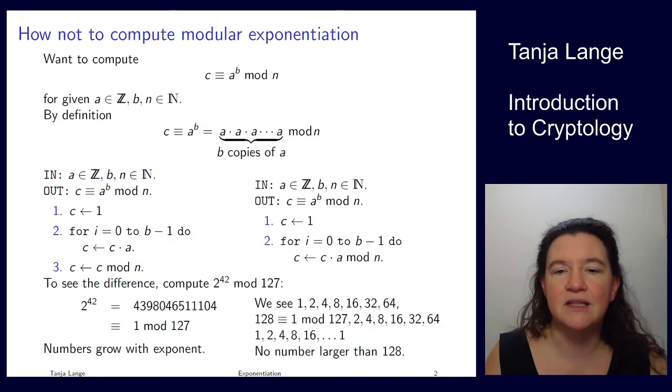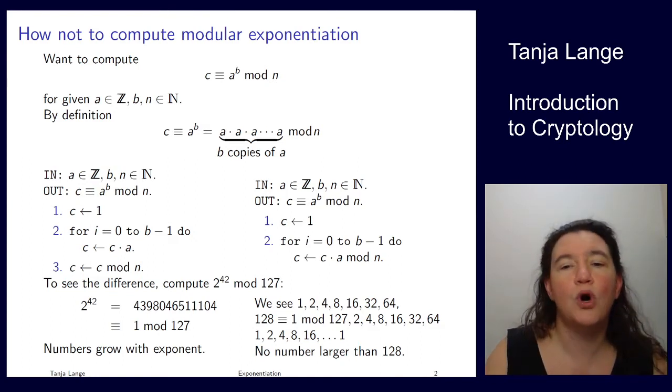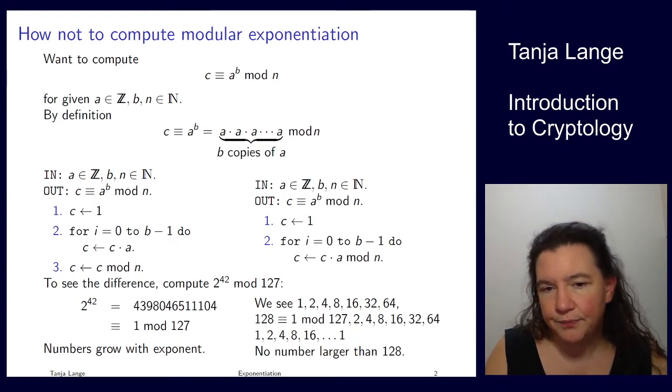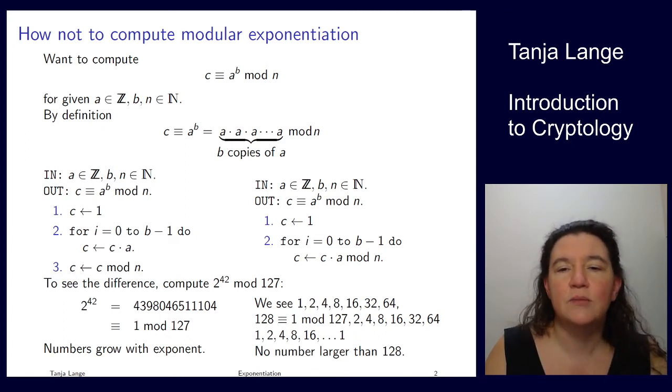Now I've constructed this example to be a very easy one. So we see then again 1, 2, 4, 8, 16 and so on. And we see that 2 to the 7 is 1. 42 is a multiple of 7, so in the end we're just getting one here. But also for any of the other results this would have been much faster. And in this case we see no number larger than 128.